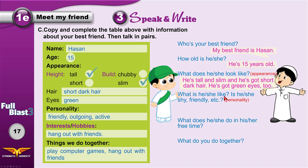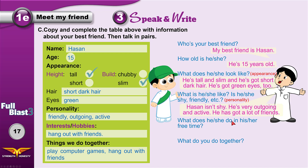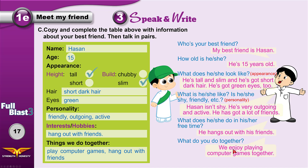What is he like? — this question asks about personality. He is outgoing and he's got a lot of friends. What does he do in his free time? — he hangs out with his friends. What do you do together? — we enjoy playing computer games together.